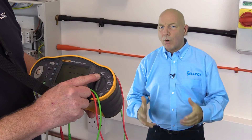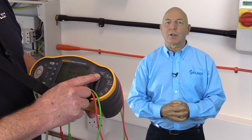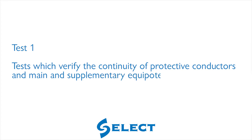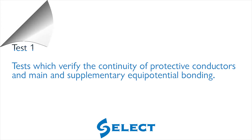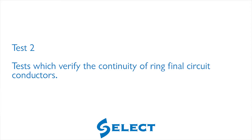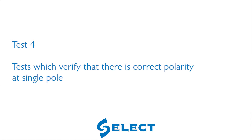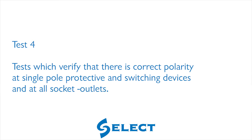The power-off tests demonstrated include Test 1, which verifies the continuity of protective conductors and main and supplementary equipotential bonding. Test 2, which verifies the continuity of ring final circuit conductors. Test 3 tests that the insulation resistance is satisfactory. And Test 4, which verifies that there is correct polarity at the single pole protective and switching devices and at all socket outlets.